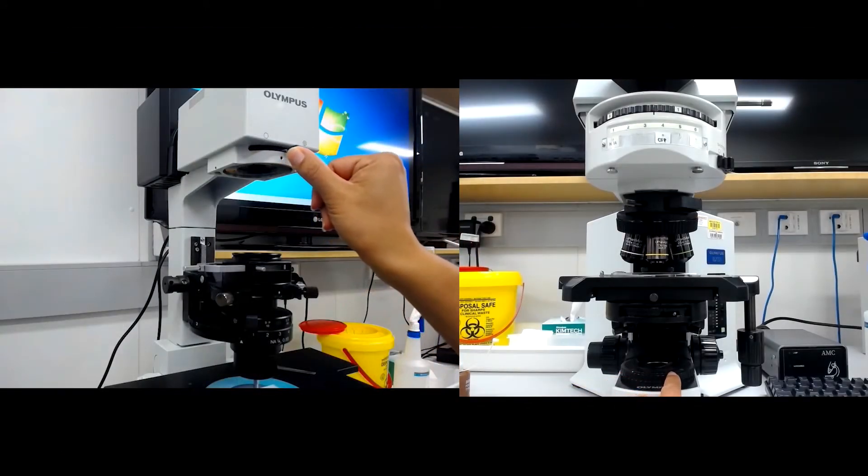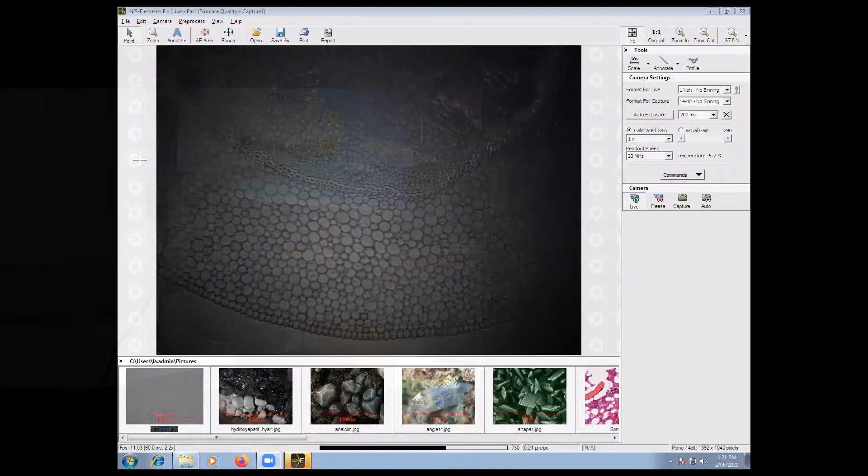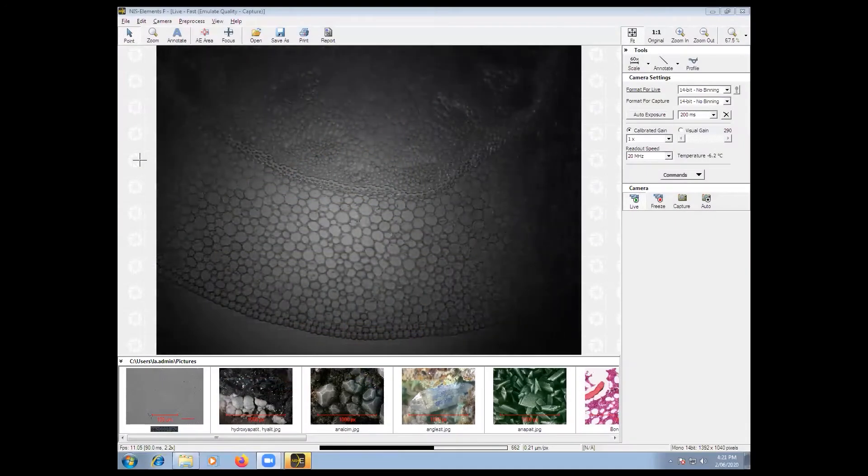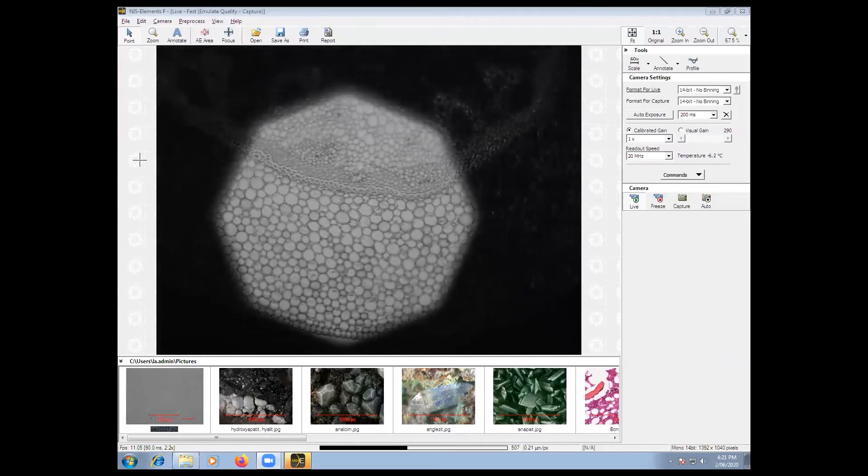Adjust the field stop diaphragm lever to close the diaphragm until you see a small bright polygon. The polygon is an image of the field stop projected onto your sample. If you don't see this polygon, you should notice that the field of view through the eyepiece gets darker.